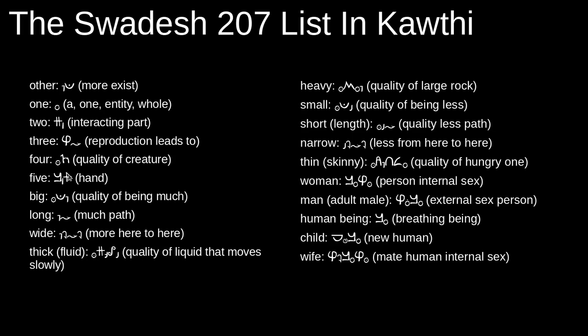And then there are some descriptive words that I had to get a bit creative with. So the word 'long', I used AI, which means much path. And 'wide' is AOEO, which means more here to here. So these are the words that I struggle with the most — these descriptive words that relate to the size of objects. But after giving it some thought, I came up with ways of describing them fairly accurately using the Karthi characters.